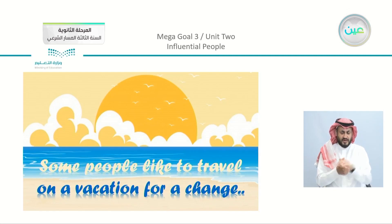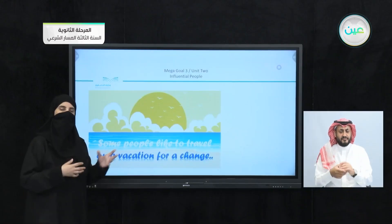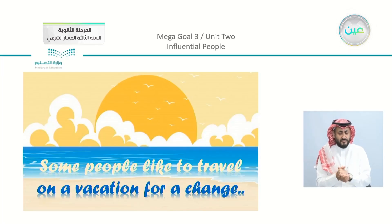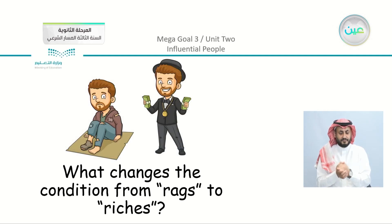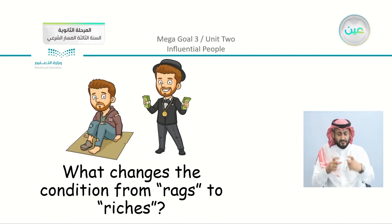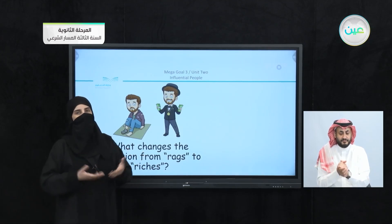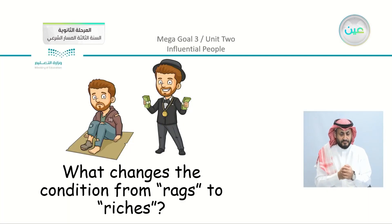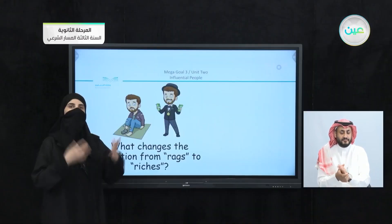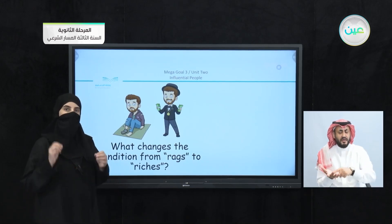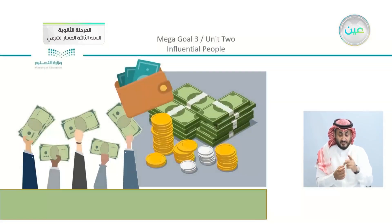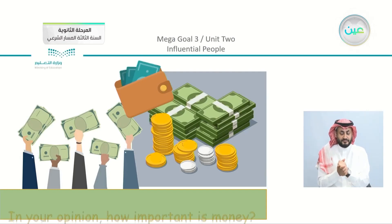Some people like to travel on a vacation for a change. Now here, I want you to think about this sentence with me. When you go on a vacation, if you want to travel, of course, you need something. Now you can see that we have here the same person and a question: What changes the condition from rags to riches? Rich is a clear word, but rags means this person is wearing rags, which means he is in a poor situation. If I want to go traveling abroad, for example, I need something. We can see that there is a hint in the picture. Of course, we need money.